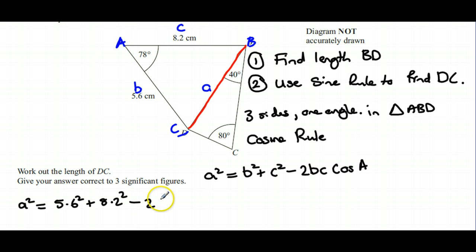The angle opposite the one we're finding is 78 degrees. When you do this calculation on your calculator, make sure your calculator is in the right mode.